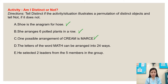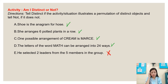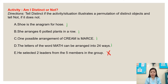The word CREAM has all distinct letters. Number four: the letters of the word MATH can be arranged in 24 ways. The answer is distinct, because for MATH: four times three times two times one equals 24 ways.